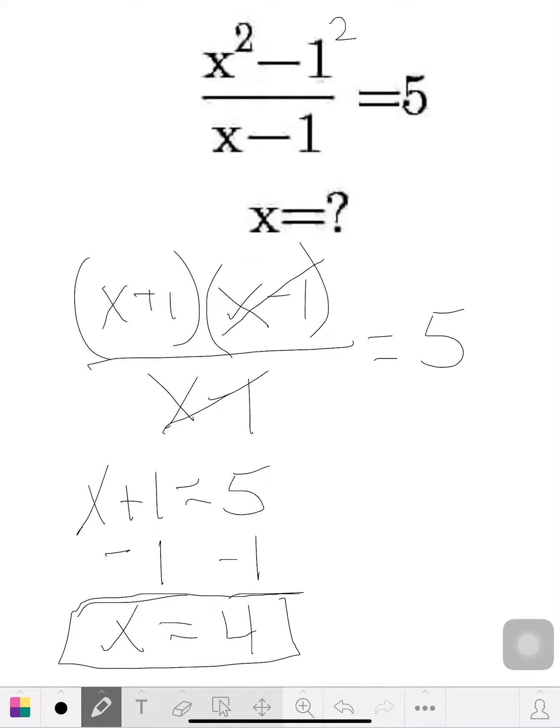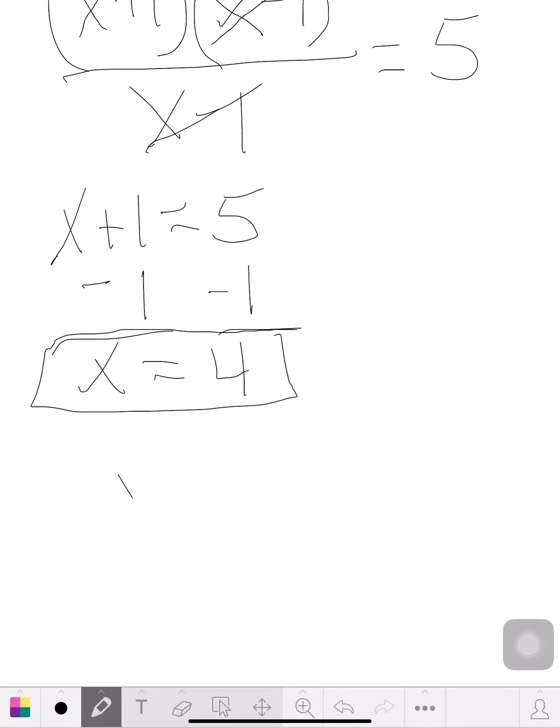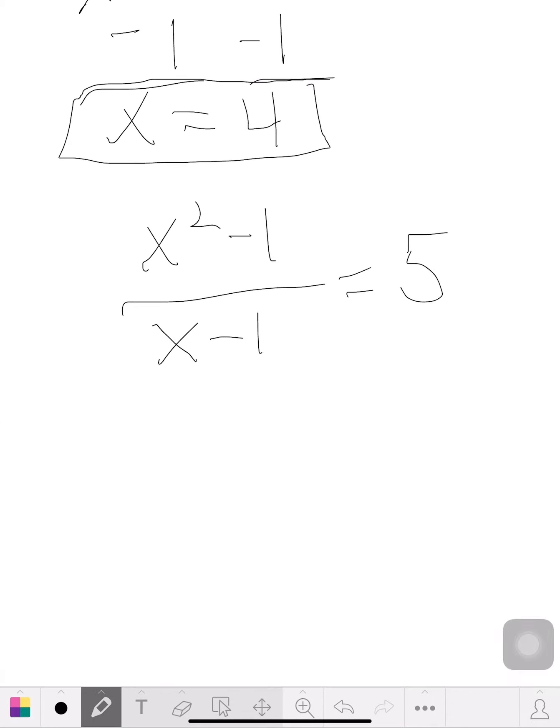So let's plug it back in, okay? I'm going to rewrite the formula down here: x squared minus 1 over x minus 1 equals 5. So let's plug the 4 in and see how that works.